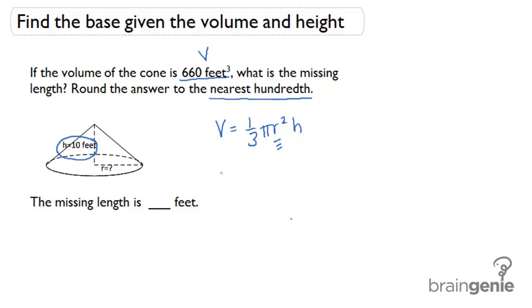Let's go ahead and plug in the information we know. We know that the volume is 660. We know that we're using pi equals approximately 3.14. We know the radius r squared is what we're solving for. And lastly, the height is 10 feet.